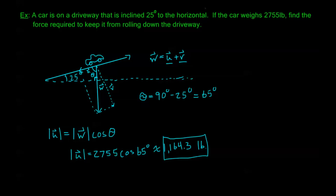We're measuring force in pounds, so we need 1,164.3 pounds of force to keep the car from rolling. In practice, this is applied through the brakes — the brakes need to withstand 1,164.3 pounds of force just from the car's own weight and gravity. This is a common type of problem for vector components — the required force is much less than the full weight of 2,755 pounds.